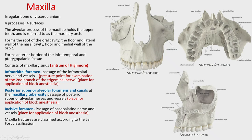On the anterior surface, the alveolar juga for the canine region form a prominent canine eminence. Lateral to that is a thin area called the canine fossa, covered by the mimic muscle levator anguli oris. The canine fossa is commonly used as a surgical entrance to the maxillary sinus. Medial to the canine eminence is the incisive fossa (lateral fossa), where mimic muscles like orbicularis oris and muscles attaching to the nose originate.